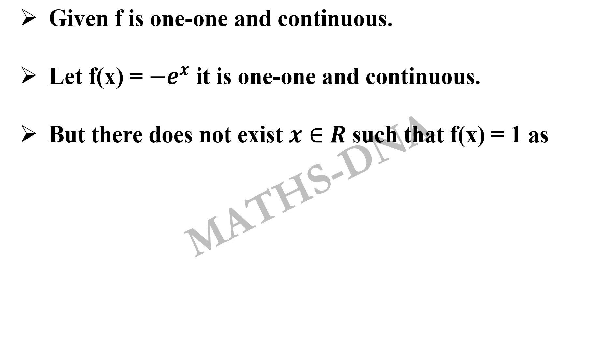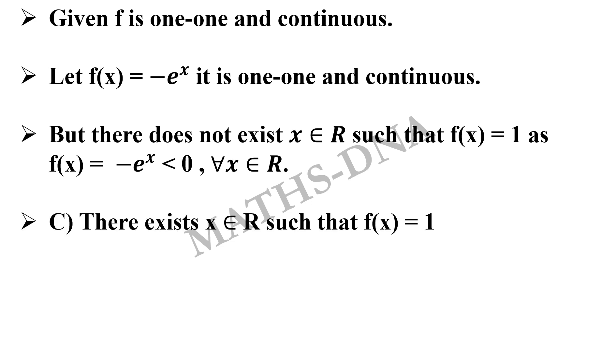As f(x) equals to -e^x which is less than 0 for all x belongs to R. So option C which says that there exists x belongs to R such that f(x) equals to 1 is again incorrect.